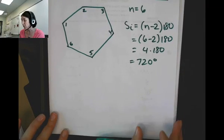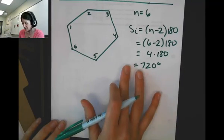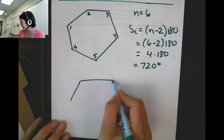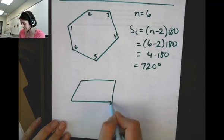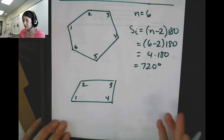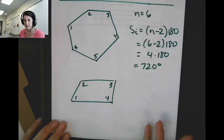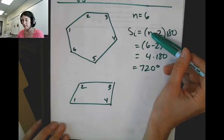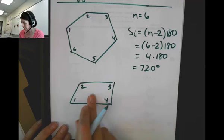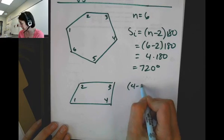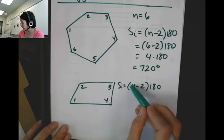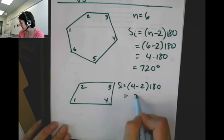Our book lists a corollary to that theorem, and it simply states that any quadrilateral, the measure of the interior angles is 360, right? Because if I put a four up here, four minus two is two times 180. So for all quadrilaterals, it's 360. This is just a little algebraic proof.